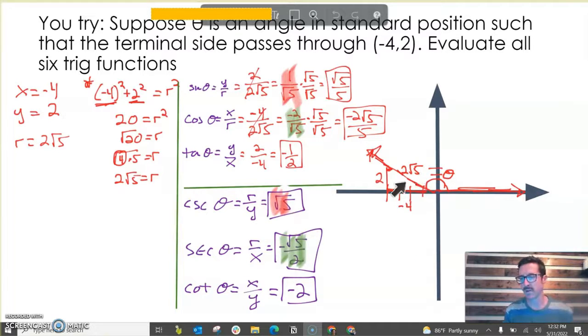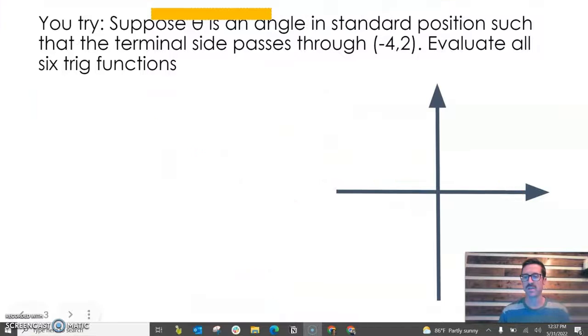Once again, these problems typically follow a certain structure. Plot your point on a coordinate plane, use Pythagorean theorem to find r, and then write out all your trig ratios. Don't forget to rationalize the denominator if needed. Good luck.